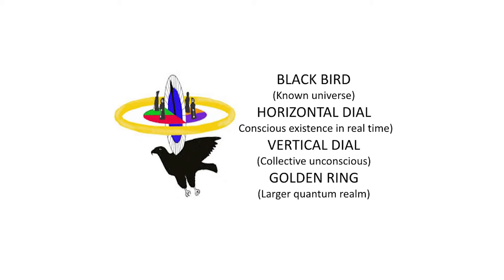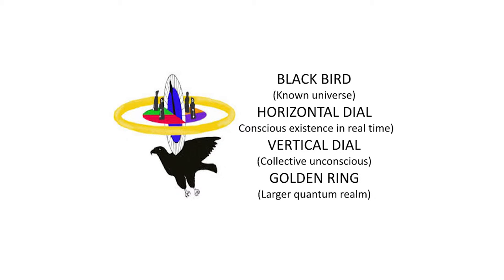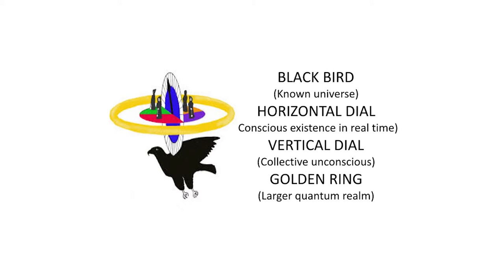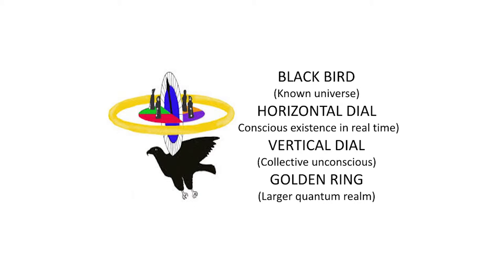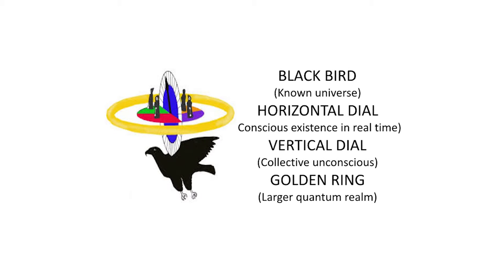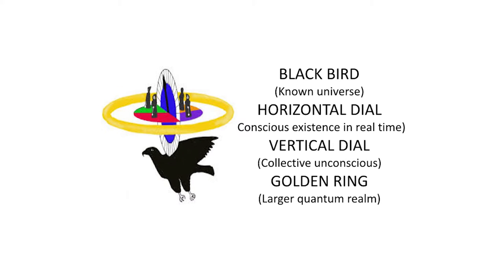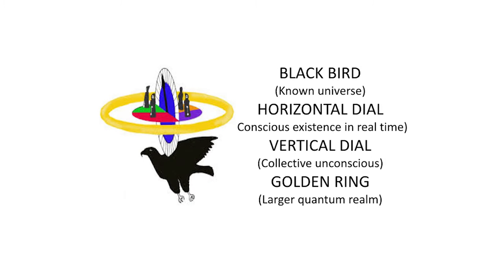The horizontal golden ring rotates at the same derivative rate as the smaller horizontal dial, but it surrounds the entire clock at a distance and is not itself supported by the black bird. So, to Jung and Pauly, the ring suggested a much larger quantum reality that transcends all of our psychic concepts of existence, conscious or unconscious, and physically extends beyond the parameters of the known universe. The golden ring was thought to represent the possible source of the collective unconscious and the underlying principles of the physical universe. It was perhaps the meaning behind the meaning of things.